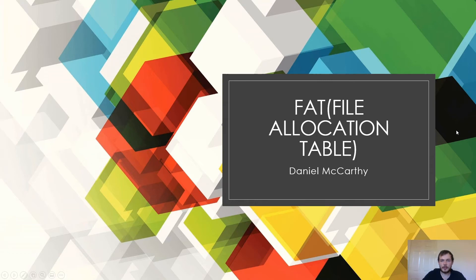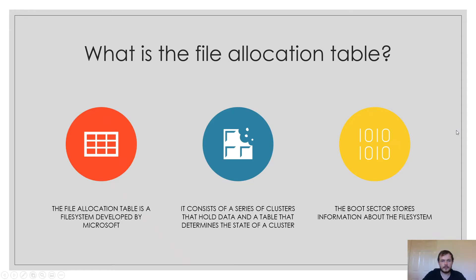What is the file allocation table? The file allocation table is a file system developed by Microsoft. It consists of a series of clusters that hold data and a table that determines the state of a cluster. The boot sector, otherwise known as the bootloader, stores information about the file system.